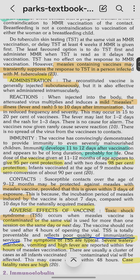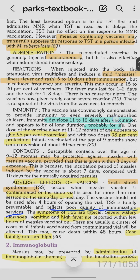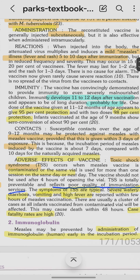Vaccine reactions include a mild measles-like illness occurring five to ten days after vaccination, with an average of seven days — the same as vaccine-induced incubation period. Immunity develops 11 to 12 days after vaccination and probably lasts for life.